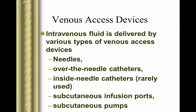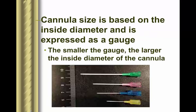There are types of venous access devices: over-the-needle catheters, inside-the-needle catheters (rarely used), and subcutaneous infusion ports or pumps. We'll practice with over-the-needle catheters. In terms of size, pink is 18 gauge, blue is 20, yellow is 22. As the diameter of the needle gets smaller, it has a higher number and is also a little shorter in length.